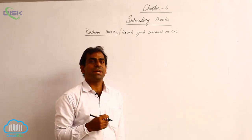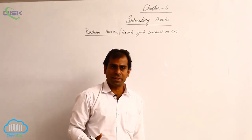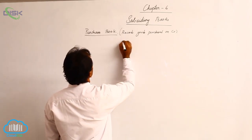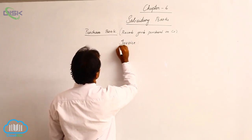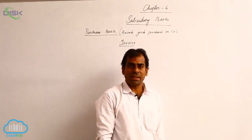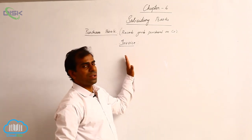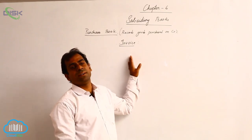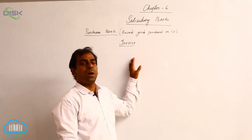In order to buy goods on credit, you need to first place an order. When you place an order, the supplier will send you goods along with a statement called an invoice. This invoice gives you details regarding the supplier, his address, and the details of the quantity of goods he is sending as per your order.